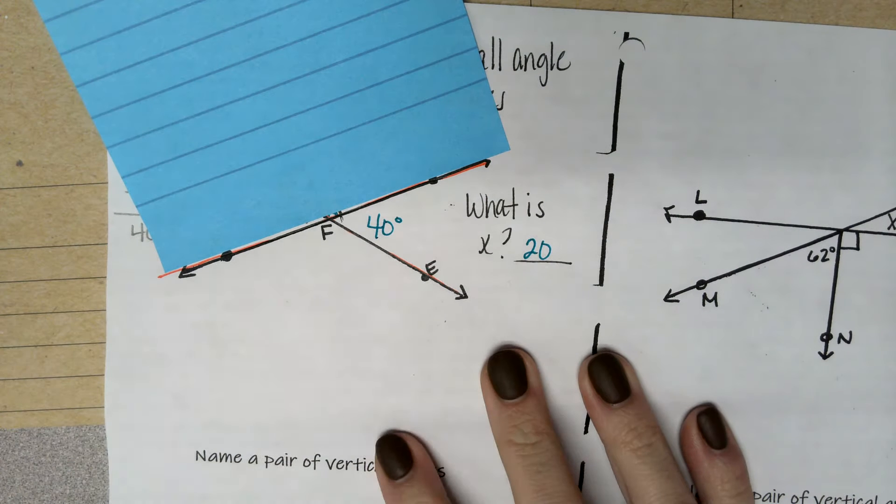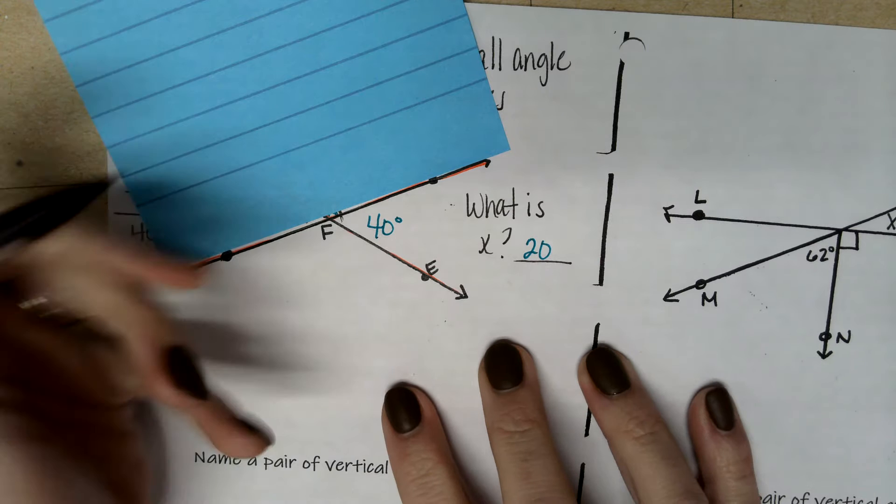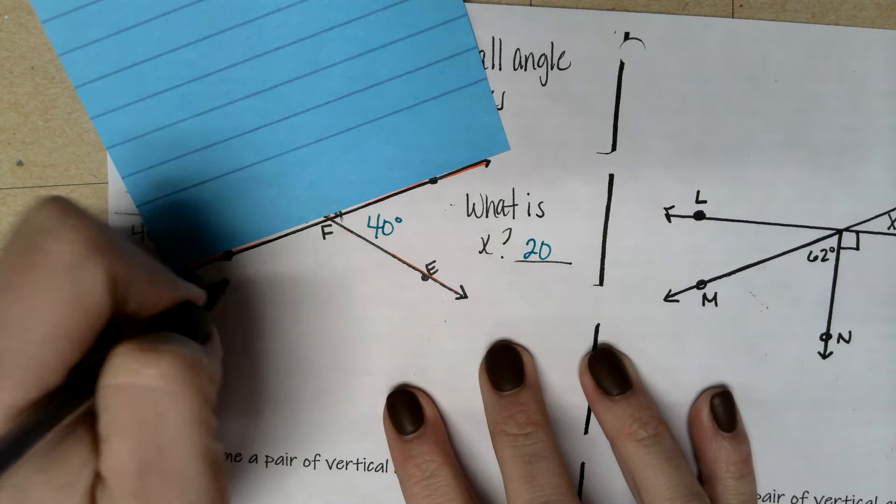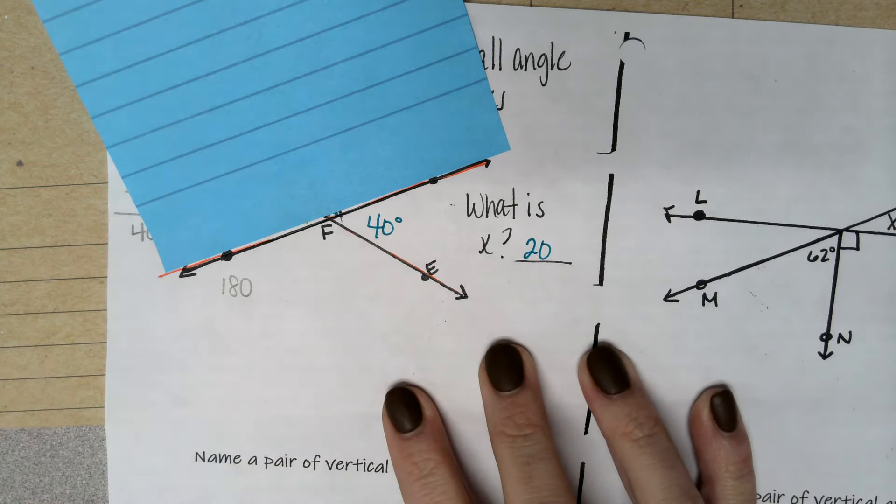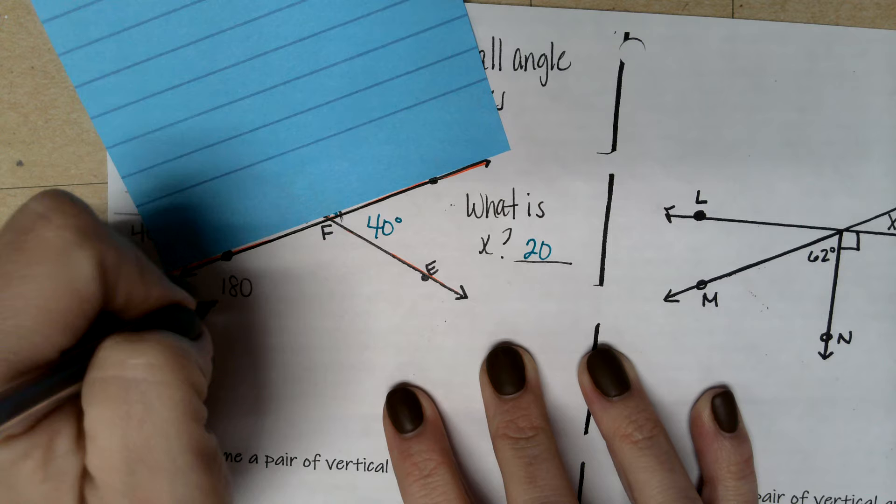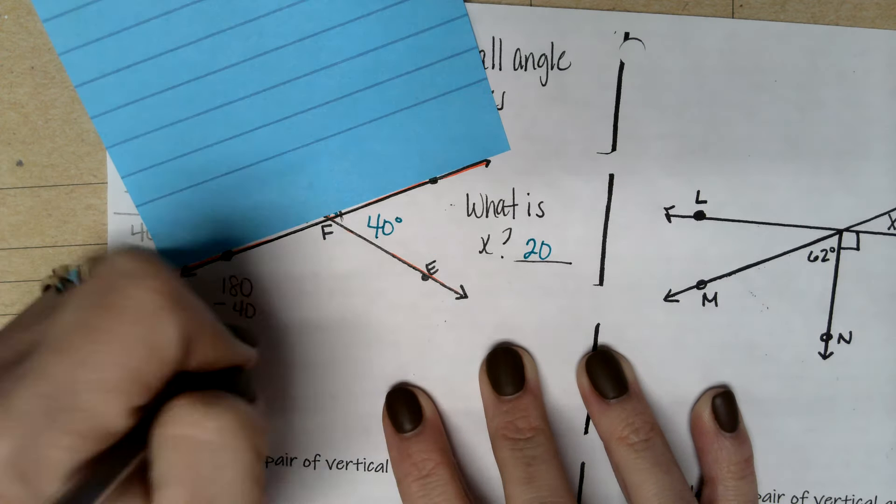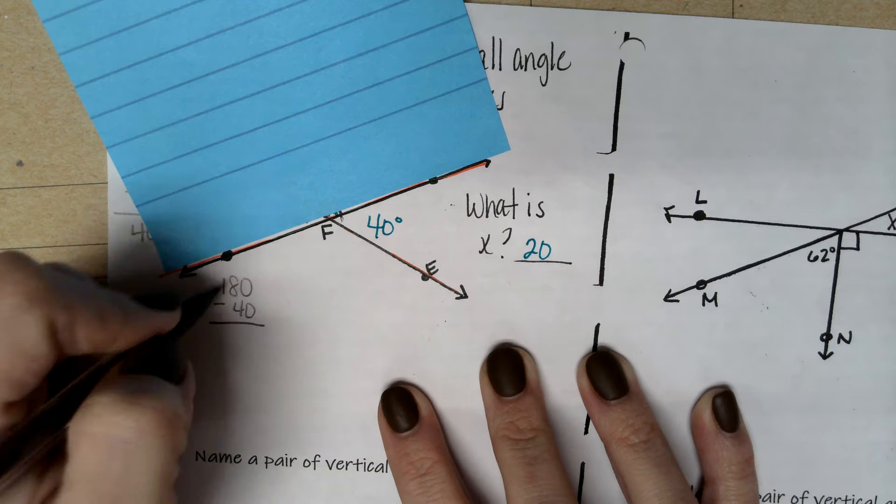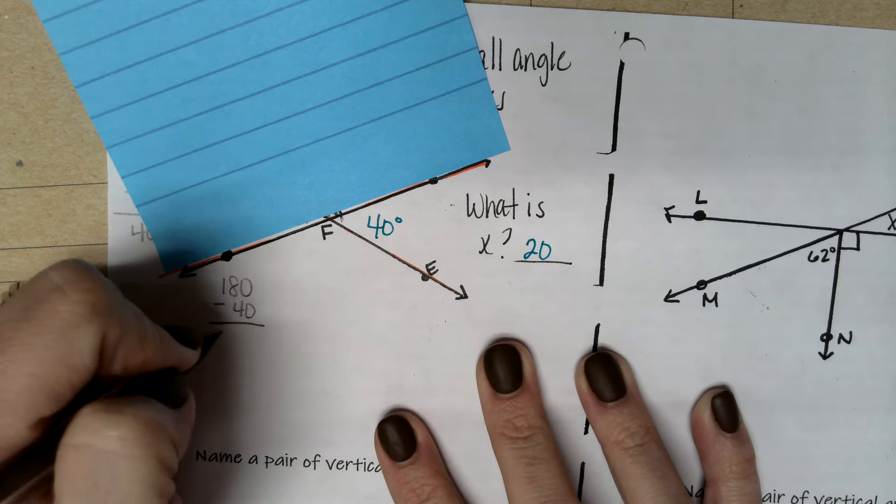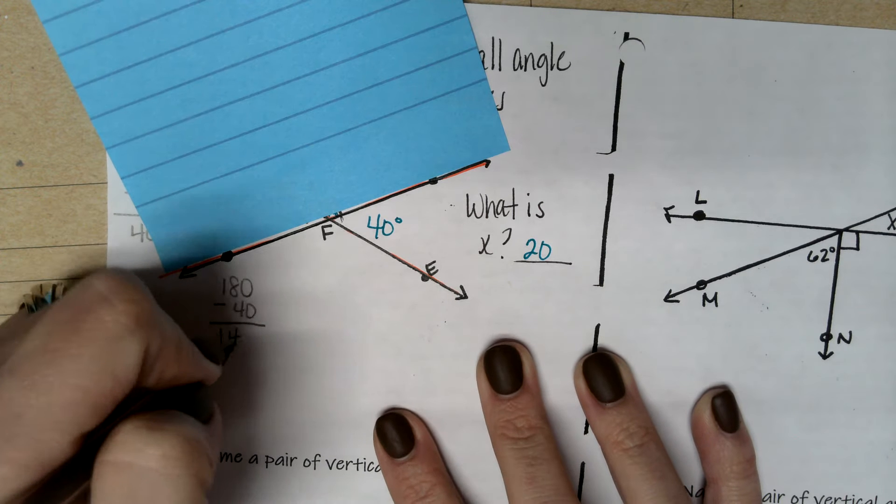We know that this is a straight line that is 180 degrees. So I can take and I can do some simple math. 180 degrees minus the 40 that we already know and labeled will give us this unknown angle measure. So 180 minus 40 is 140.